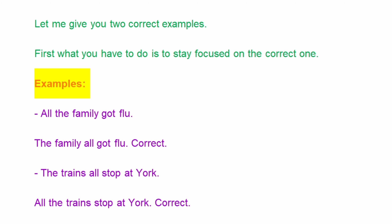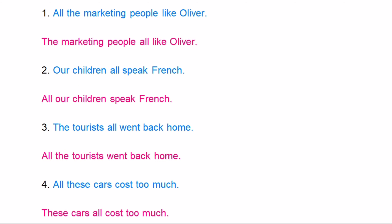Let me give you two correct examples. First, stay focused on the correct one. Number one: 'All the family got flu' — the correct one is 'The family all got flu.' Next: the correct one is 'All the trains stop at York.' Also: 'All the marketing people like Oliver' or 'The marketing people all like Oliver.'